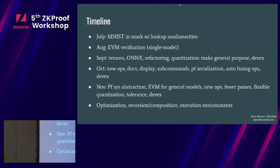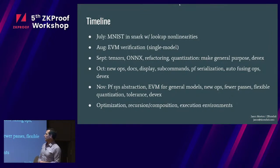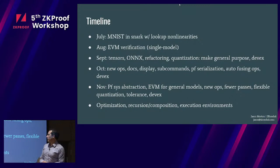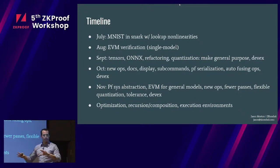Let me talk about the timeline. We started in July and were able to put an MNIST model into a SNARK using nonlinearities — using lookup tables in Halo 2 to build nonlinearities — and EVM verification of a single model using the Privacy Scaling Explorations team's work. We spent a lot of time refactoring and making it into a general-purpose tool that can ingest arbitrary tensors and creating a really good developer experience. It's important to produce tools that make it easy to use zero-knowledge even if you don't want to deal with the underlying cryptography. The stage we're at now is that we can roughly load MobileNet but not quite run it.